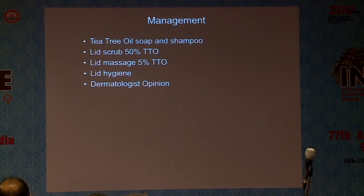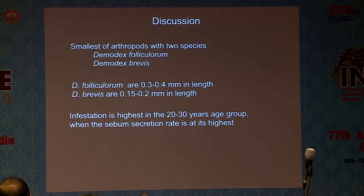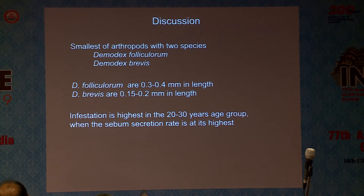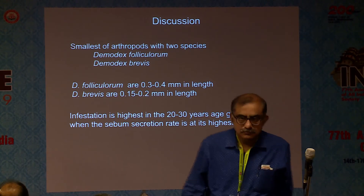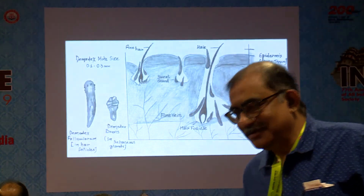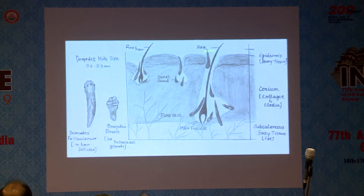These are cases that don't respond to conventional treatment, which indicates you should look for something else — the importance of examining the adnexa. There are two species: demodex follicularum, which attaches to the lash follicle and is 0.3–0.4 mm in length, and demodex brevis, which burrows inside the pilosebaceous unit in the sebaceous and meibomian glands and is 0.15–0.2 mm in length. Infestation is highest in the 20–30 age group when sebum secretion is at its peak.